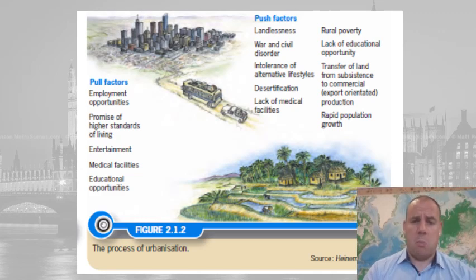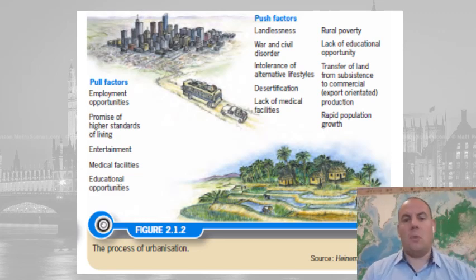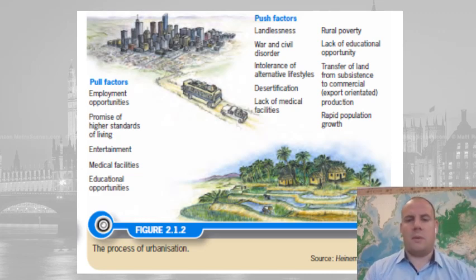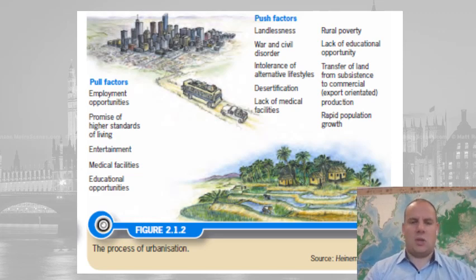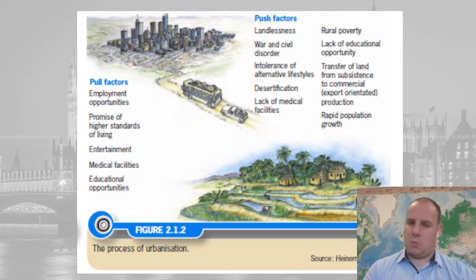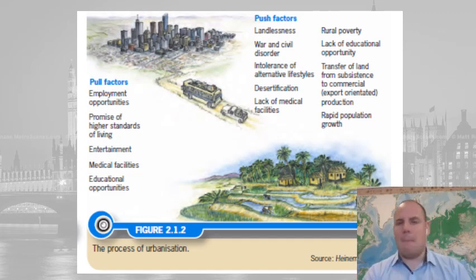A push factor is something that makes you want to leave. For developing countries, push factors include landlessness, rural poverty, civil war, lack of educational opportunity, intolerance of alternative lifestyles, transfer of land from subsistence to commercial farming — subsistence is making just enough food for yourself, commercial is selling crops for money — desertification, lack of medical facilities, and rapid population growth.